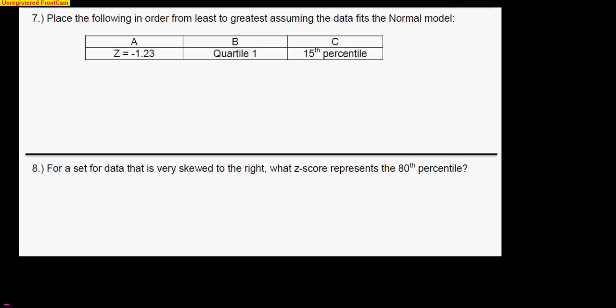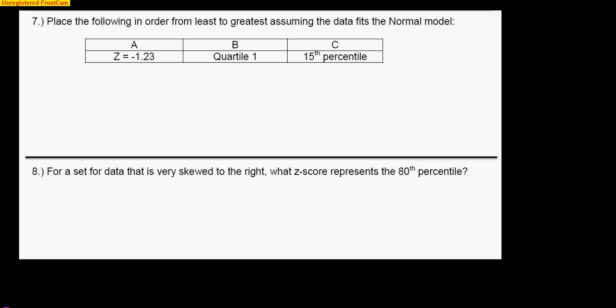Alright, here's another example, 7 and 8, that I want to make sure is clear to everybody. On number 7, I told you that this data came from data that fits the normal model. I just simply want you to rank these from least to greatest. Well, the one way that we can rank things is if they're all in the same value. So A is already a Z-score. Let's go ahead and find the Z-score for the quartile 1. Some of you may actually remember this, but if you do an invert norm of 0.25, the bottom 25% is Q1, you get a Z-score of negative 0.67.